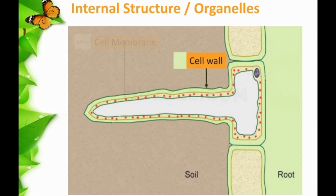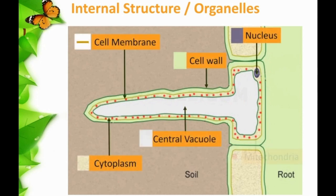Its internal structure consists of cell wall, cell membrane, nucleus, cytoplasm, central vacuole, and mitochondria floating in the cytoplasm.